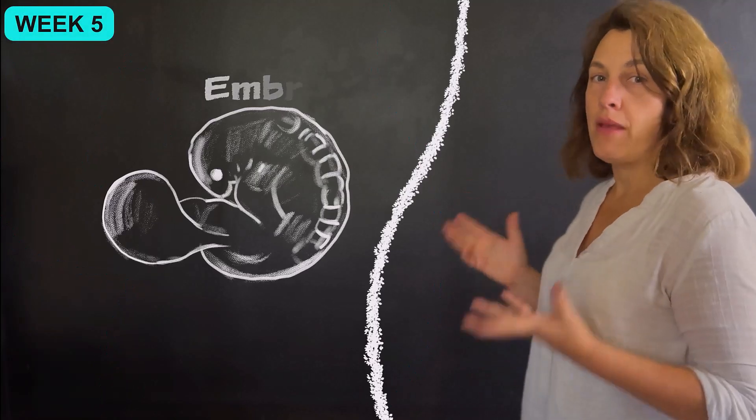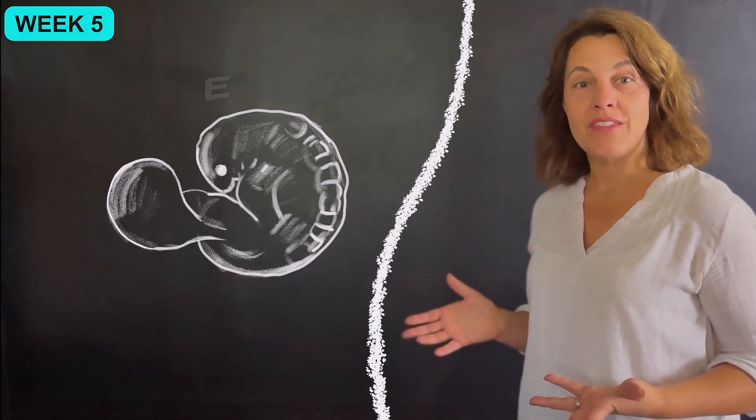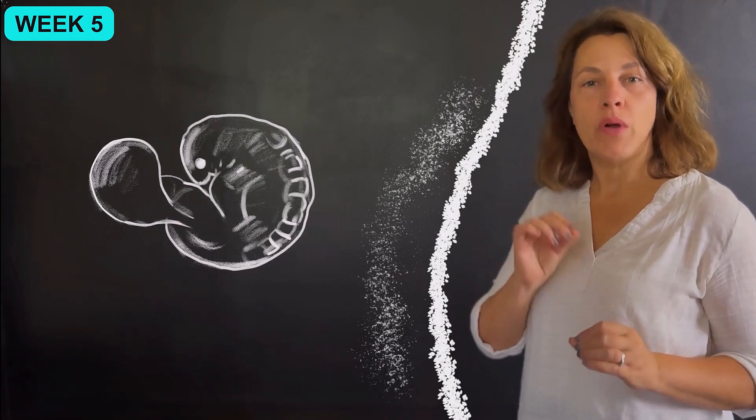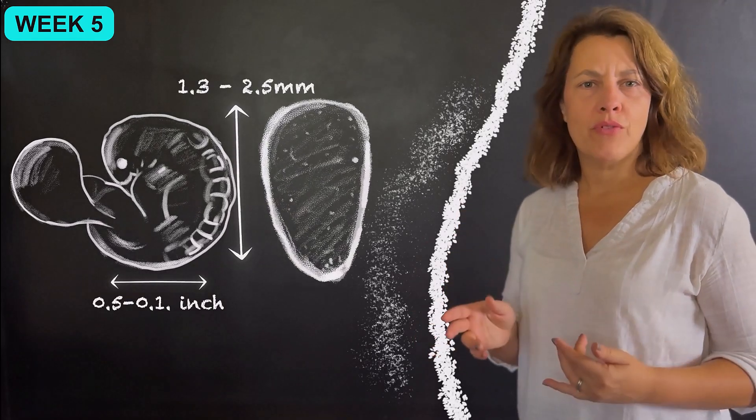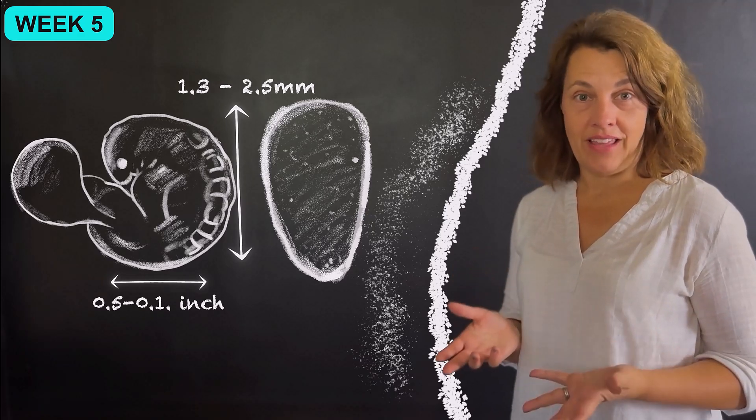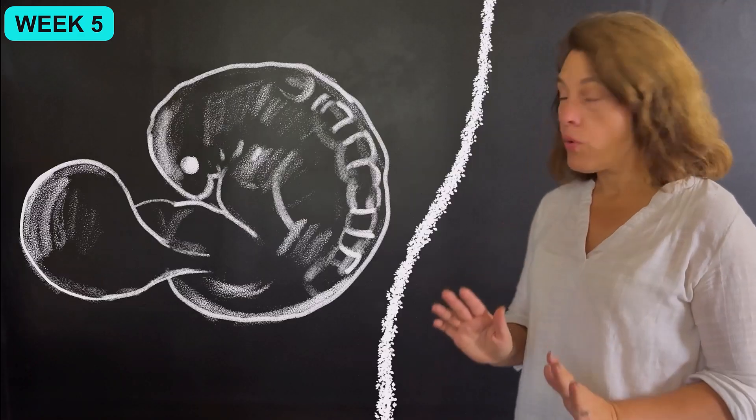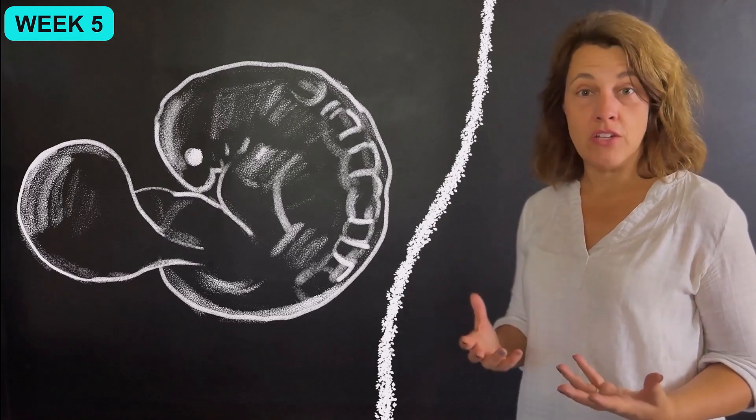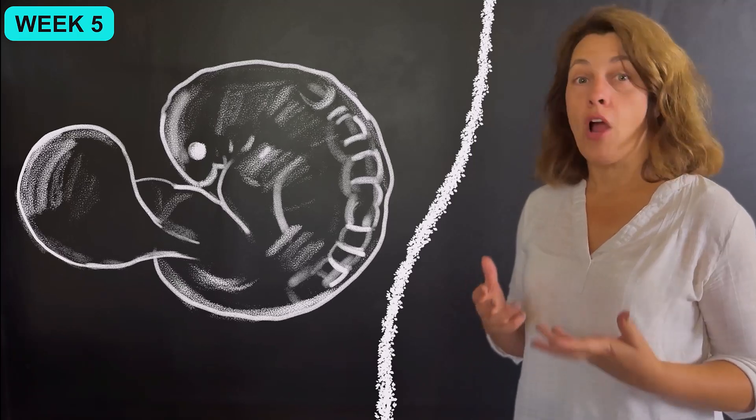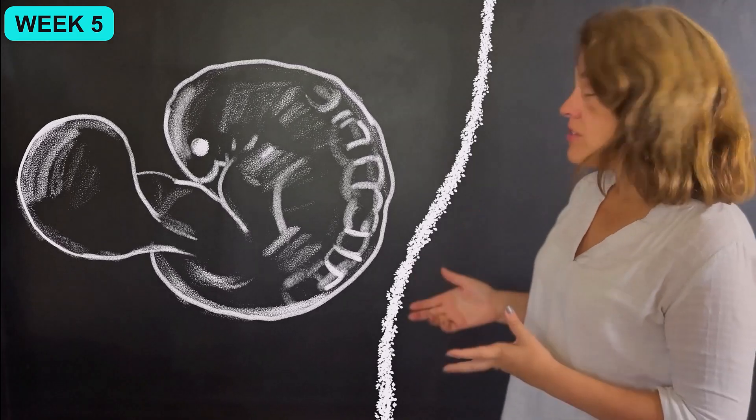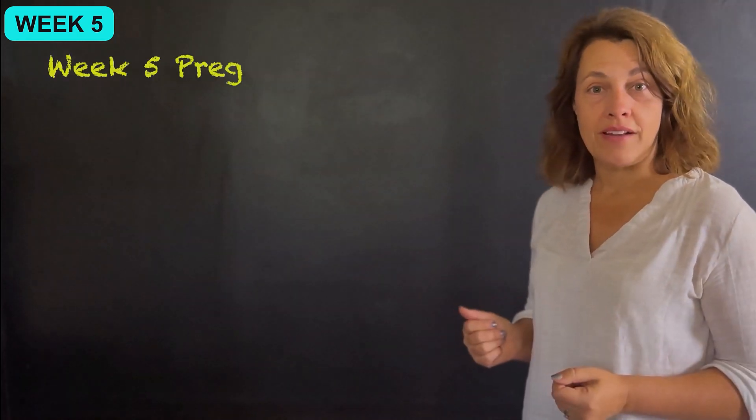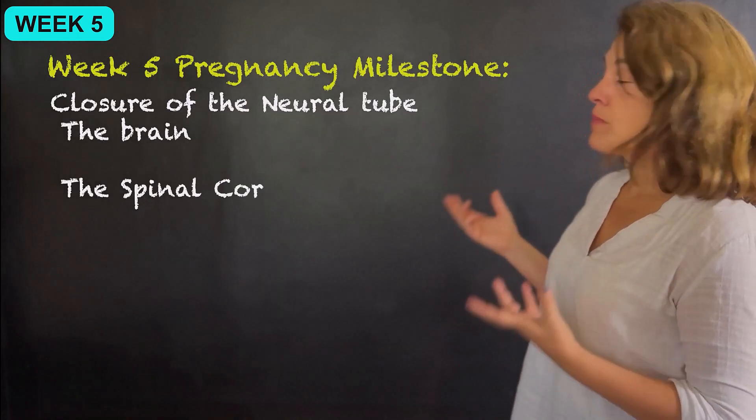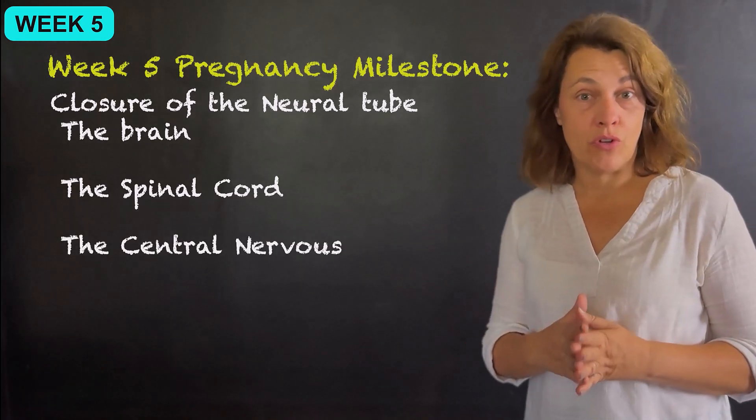Well, the baby is called an embryo at this point and it's about the same size as a sesame seed, measuring approximately 0.05 to 0.1 inches or 1.3 to 2.5 millimeters in length. Now this is another important week for rapid cell development. It's a time when the foundations of many of the organs and systems of the body are being set up. A milestone that happens during the fifth week of pregnancy is the closure of the neural tube. This structure will go on to form the brain, the spinal cord, and the entire central nervous system.